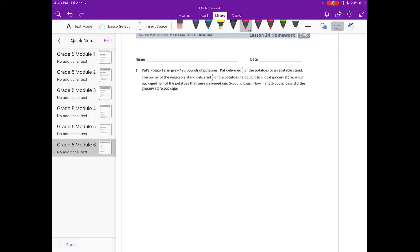Let's start back at the very beginning and work through this sentence by sentence. They grew 490 pounds of potatoes, and Pat delivered three-sevenths of those potatoes to a vegetable stand. We need to find out what three-sevenths of 490 would be. Remember, 'of' means times, so we're going to do three-sevenths times 490.